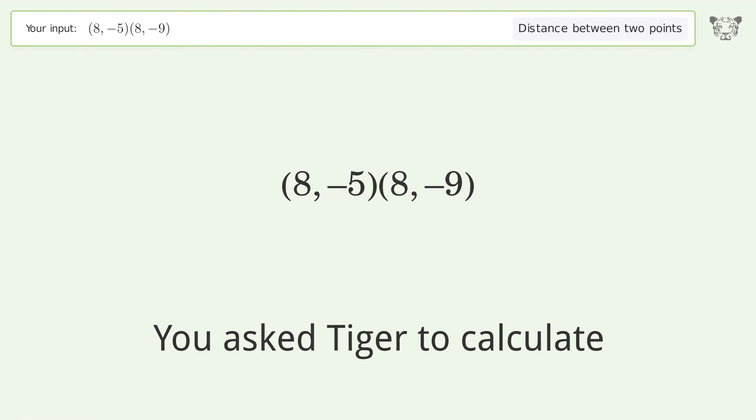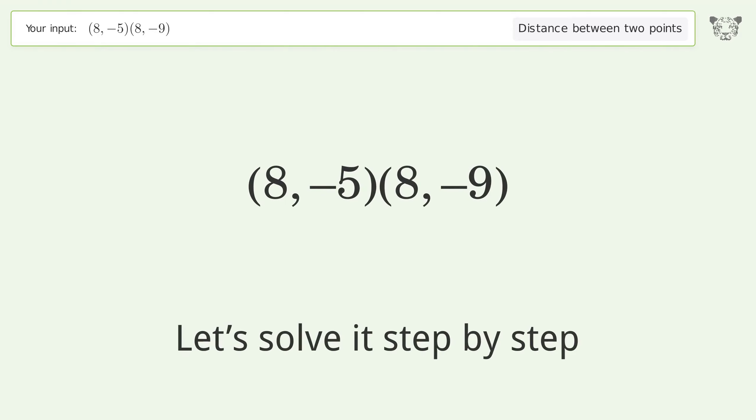You ask Tiger to calculate the distance between two points. The distance between the two points is the square root of 16, or 4. Let's solve it step by step.